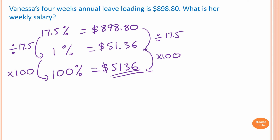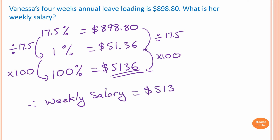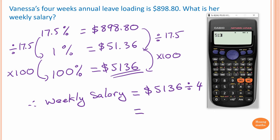To work out weekly salary, therefore weekly salary is equal to $5,136.00 divided by 4, which is equal to $1,284.